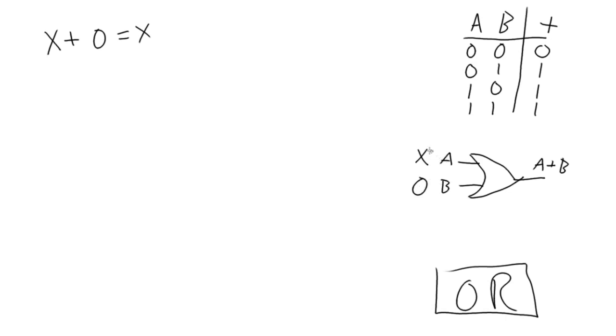But A is at X, and X is a Boolean variable, which means it can be 0 or 1. And so if A changes to 0, the output's 0, but if it changes to a 1, the output is a 1.